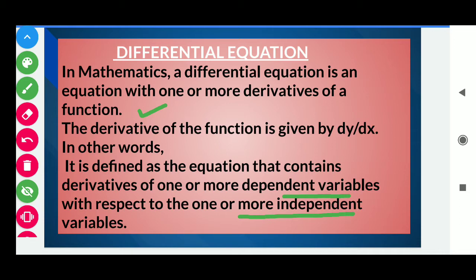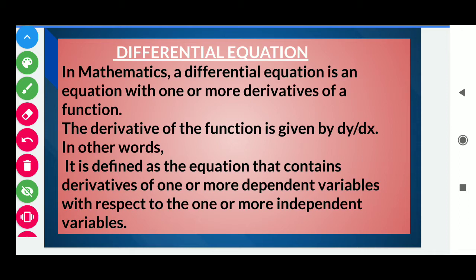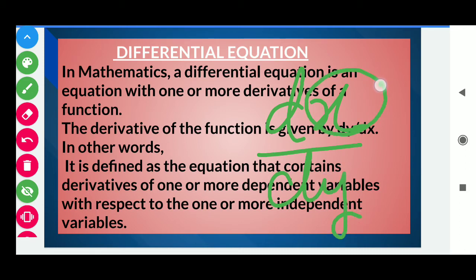Students, first of all, you need to know what are dependent variables and what are independent variables. If we do the derivative of y with respect to x, then here y is the dependent variable and x is called the independent variable. The variable with respect to which we do the derivative is called the independent variable. So if we are doing the derivative of x with respect to y, then x is the dependent variable and y is the independent variable, because x is changing with respect to y.